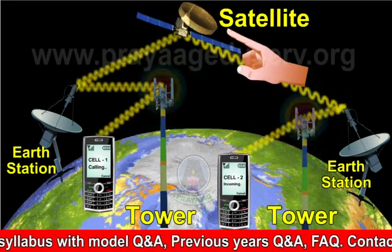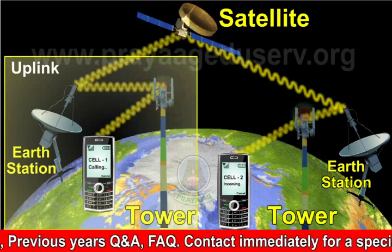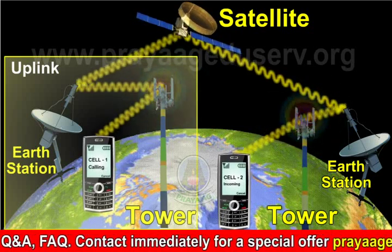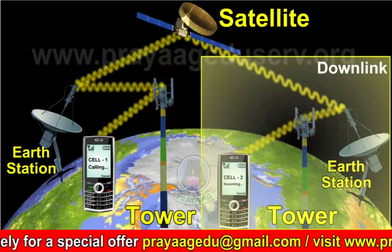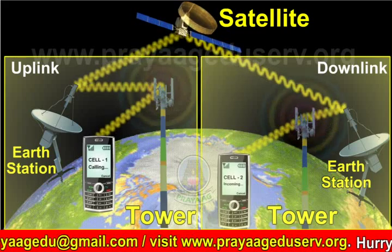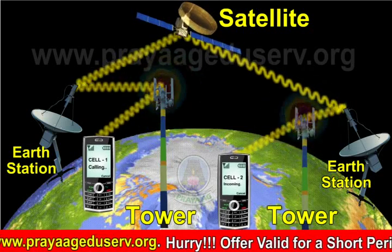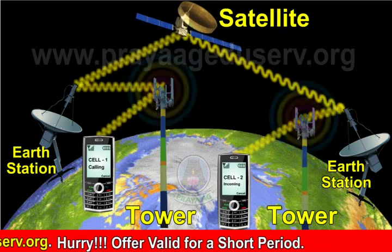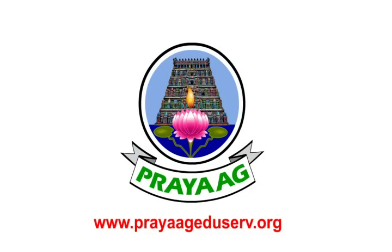The satellite receives the modulated RF carrier at the predetermined uplink frequencies from all the earth stations in the network, amplifies these frequencies and then retransmits them back to earth at downlink frequencies. The downlink frequencies are kept different from the uplink frequencies in order to avoid interference. The modulated carrier received at the receiving earth station is processed to get back the original baseband signal, which is then sent to the user through a terrestrial network.